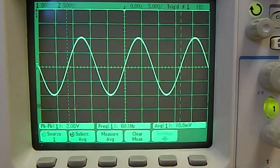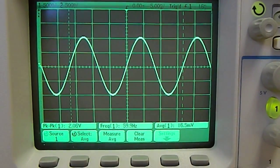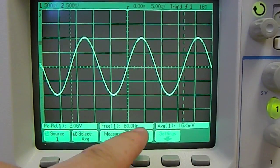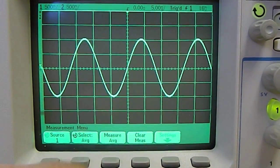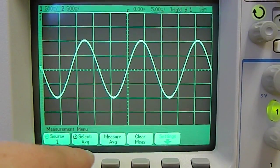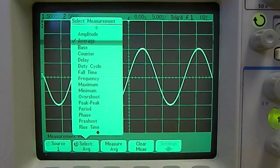There it is. Once I've done this, if I want to get rid of a measurement, I can just hit clear measurements. And all the measurements that I've made have gone away.